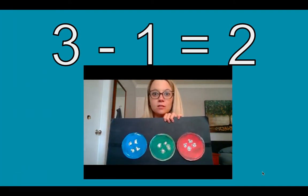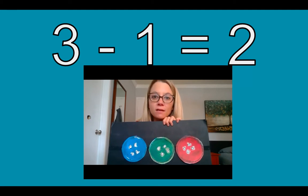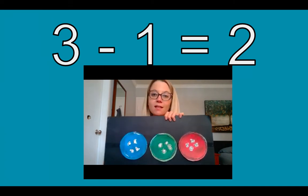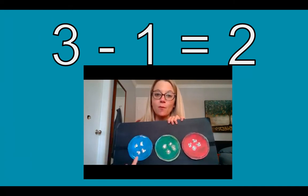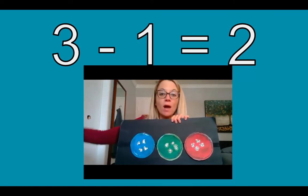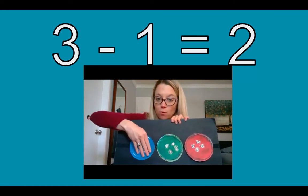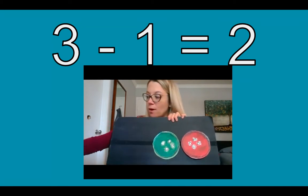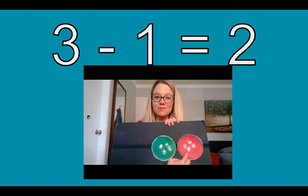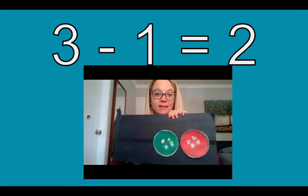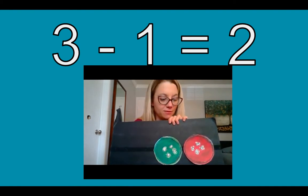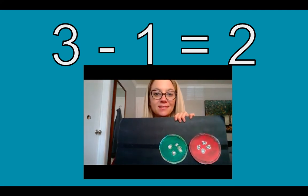Oh gosh, kids. It looks like Pete lost another button. It said three take away one equals two. Let's check with my buttons. We have three — one, two, three. And when we take away, it means it's not there anymore. We're going to take away one button. How many are left? One, two — three take away one is two. Poor Pete's only got two buttons left. I hope his sweater is going to be okay. Let's keep reading.